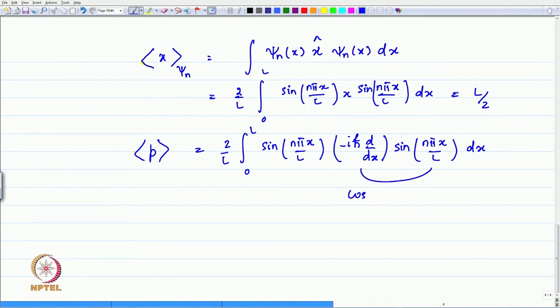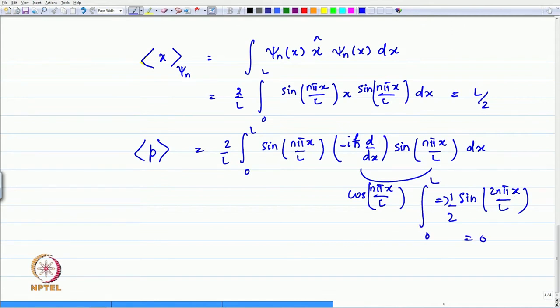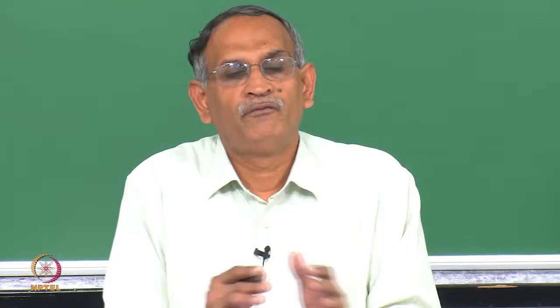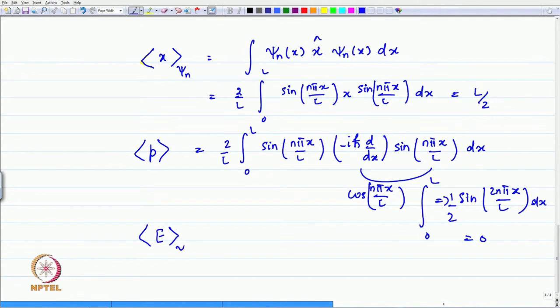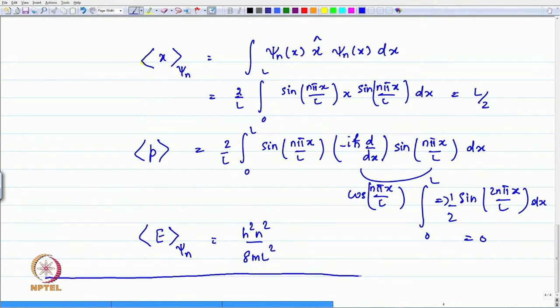Likewise, the average value of momentum for the particle in the box was argued to be zero, because momentum is a vector with positive or negative direction at any point. You can verify this by writing the integral (2/L) times the integral of sin(n pi x/L) times (-i h-bar d/dx) times sin(n pi x/L) dx. The derivative of sine gives cosine, and the product sin times cosine gives sin(2n pi x/L)/2. The integral of sin(2n pi x/L) over a full period from 0 to L is zero, confirming the average momentum is zero.